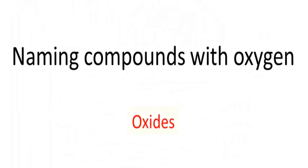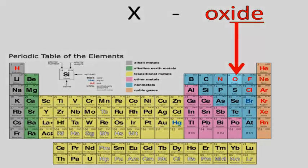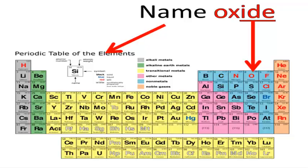The first family of chemicals we're going to look at is called oxides. All oxides consist of two elements, one of them being oxygen. And in their name you always end with oxide.